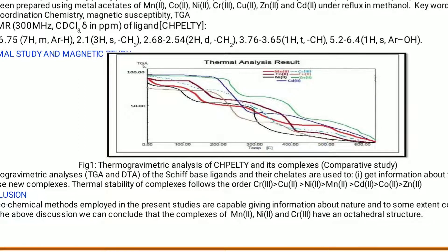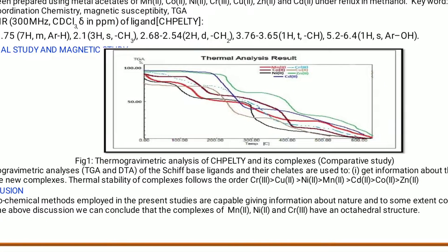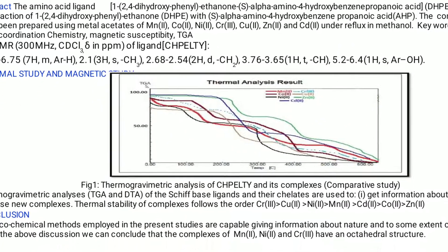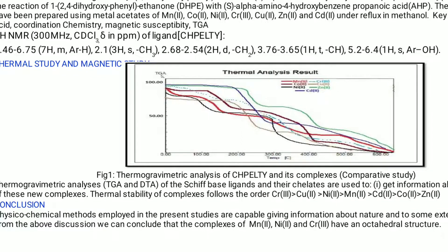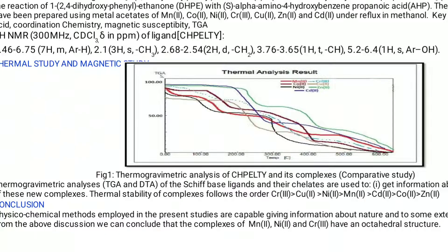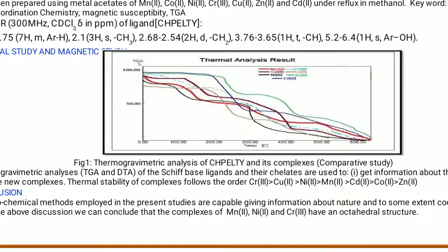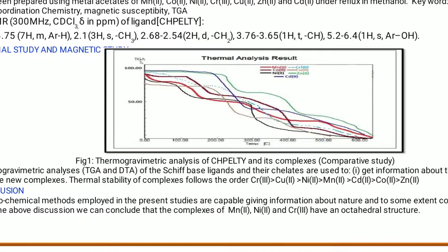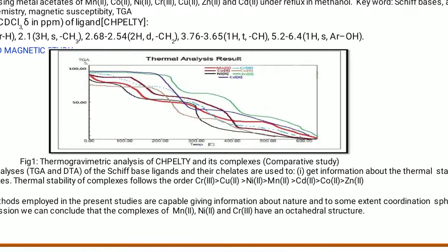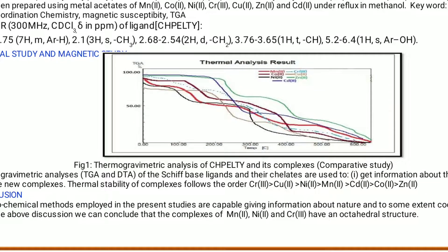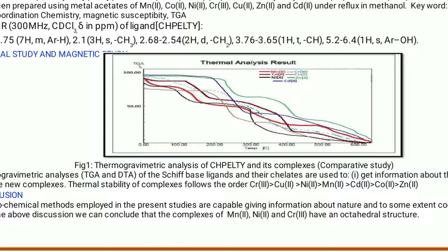Finally, it can be concluded that on the basis of various physicochemical parameters — and while other parameters could also be incorporated, in the present investigation we focus on thermogravimetric analysis — we also have IR and NMR spectroscopy data. On the basis of these data, the physicochemical methods employed are capable of giving information about the nature and, to some extent, the coordination sphere. From the above discussion, we can conclude that the complexes of manganese, nickel, and chromium have an octahedral structure.